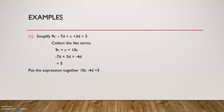Here we have an example. It says simplify 9c minus 7d plus c plus 3d plus 5. So how are we going to do it? We're going to collect all the like terms together, which means we'll collect all the c's together and all the d's together, and then we'll collect the numbers as well.